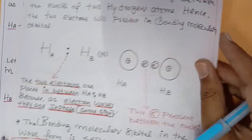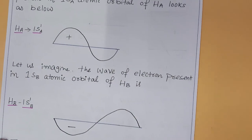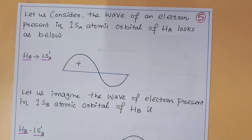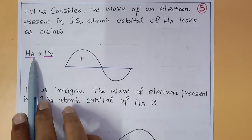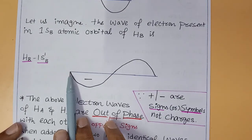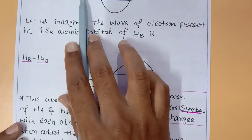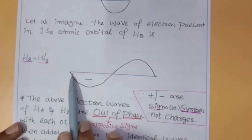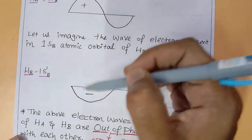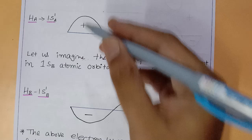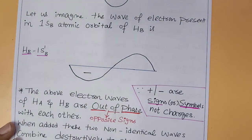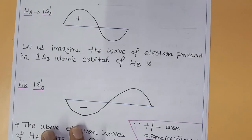Next is the anti-bonding molecular orbital formation. The anti-bonding molecular orbital forms in the opposite way to the bonding molecular orbital. Here, the wave generated by hydrogen atom A's electron and the wave from hydrogen atom B's electron are opposite — the top of one is plus while the other is minus. These two waves have opposite signs and interact destructively, forming the anti-bonding molecular orbital.